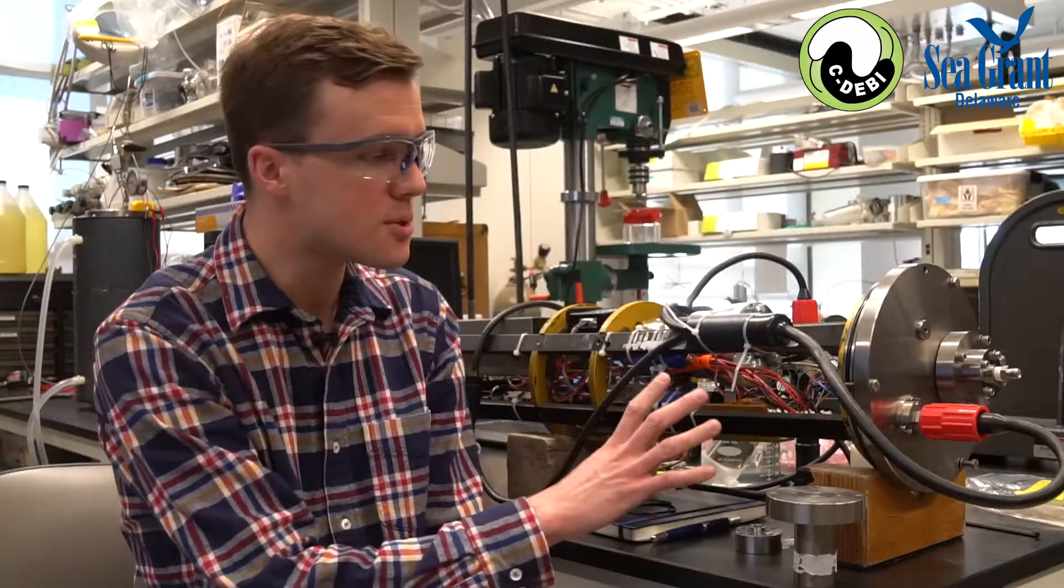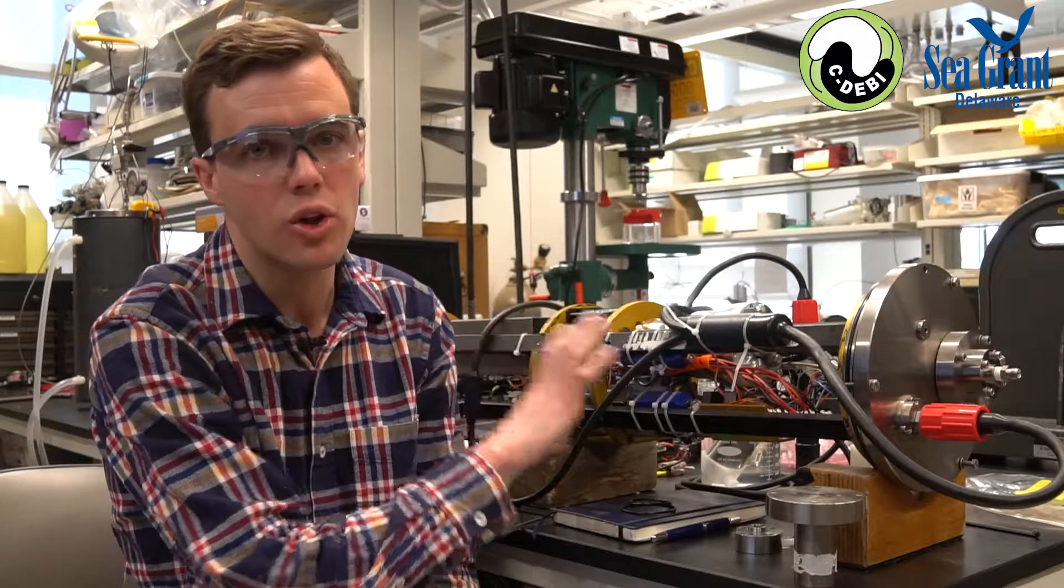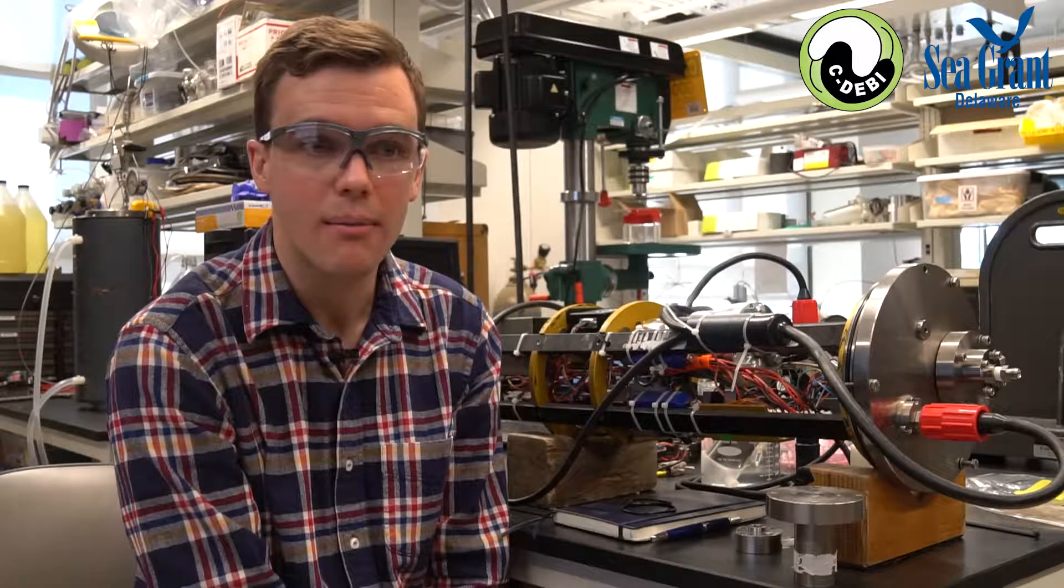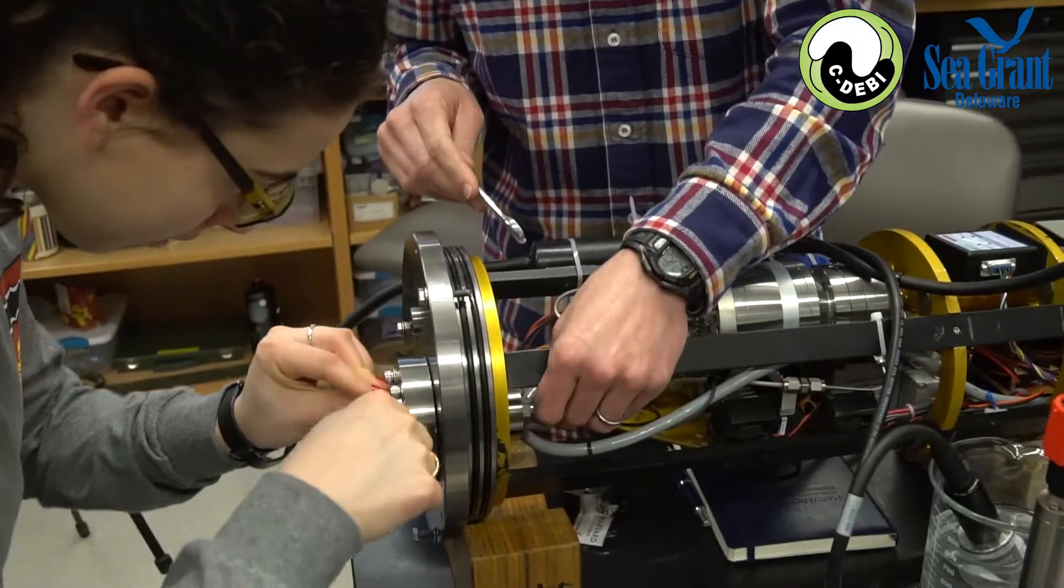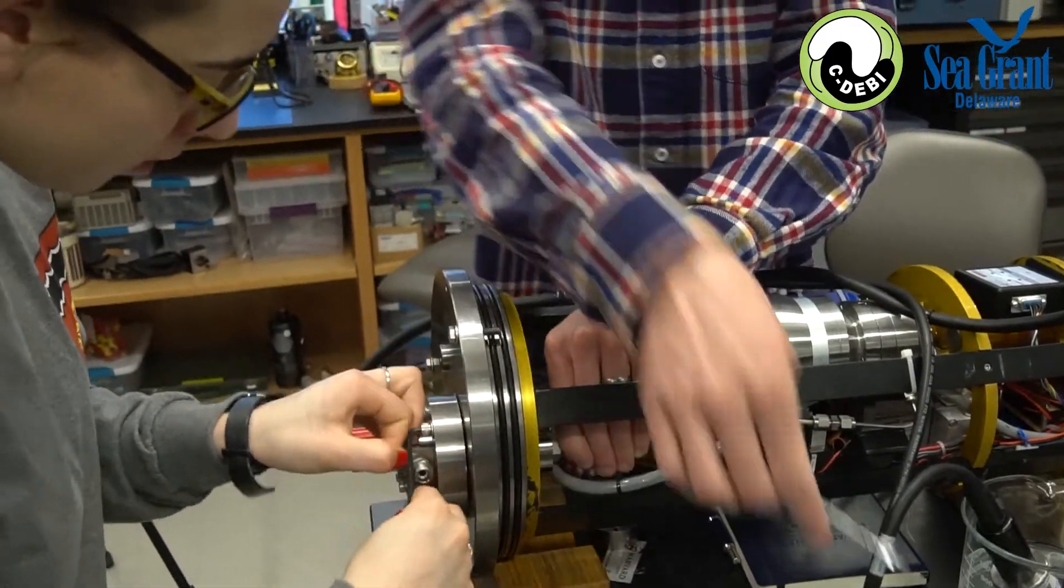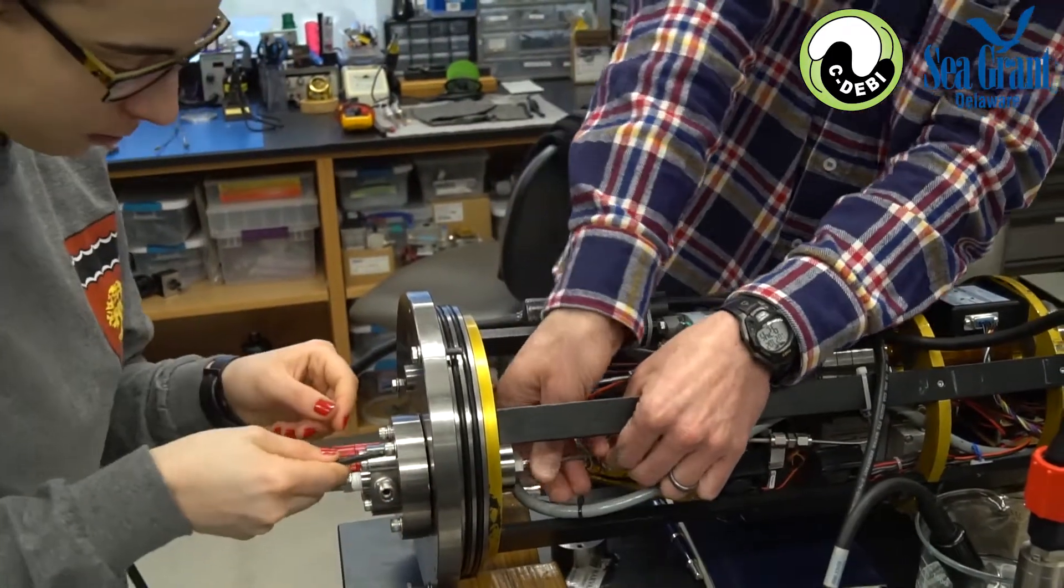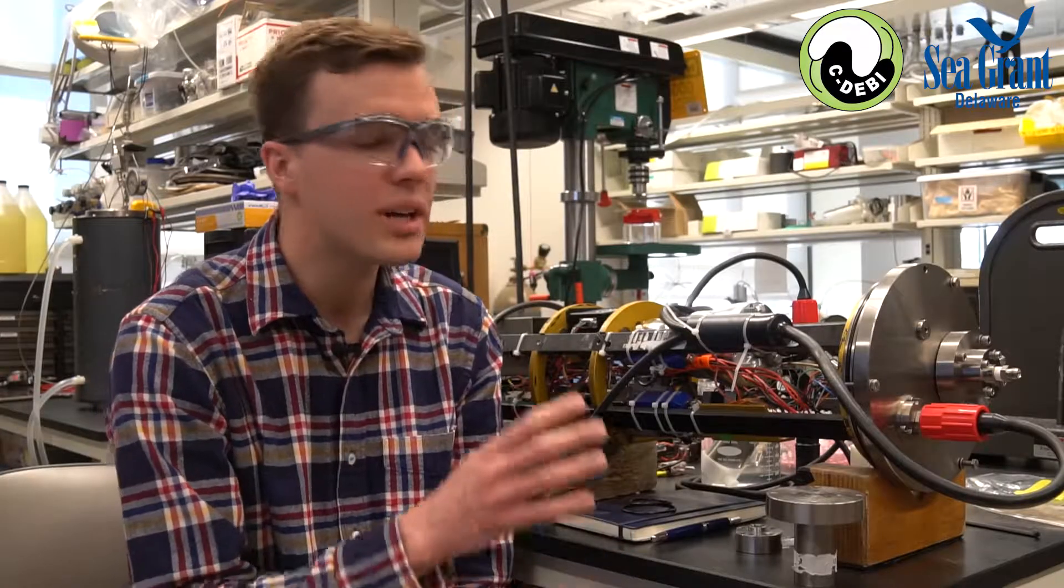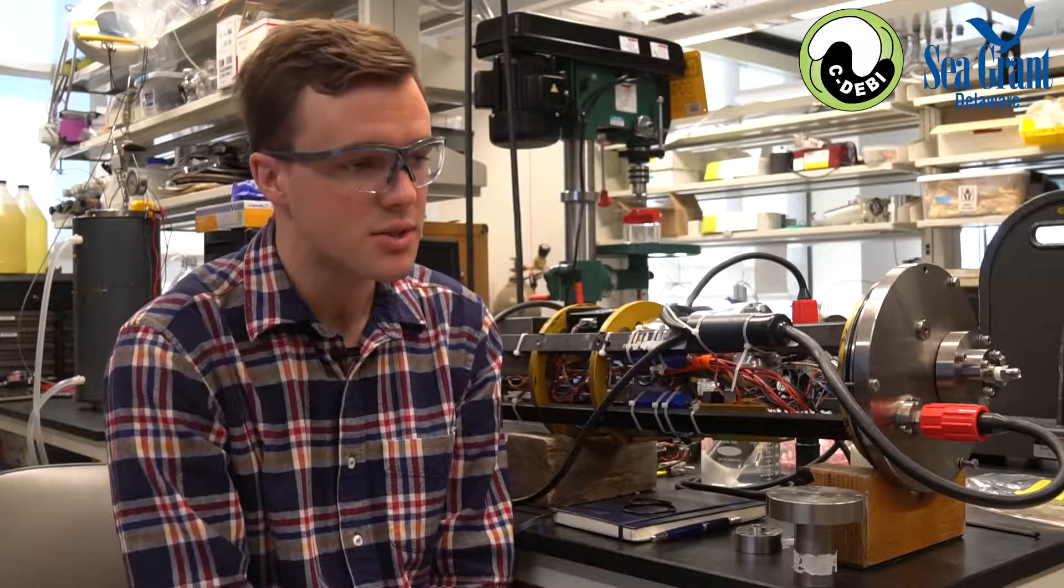We can take this instrument in a large tube pressure vessel to 4,000 meters depth, and that's several thousand pounds per square inch—the equivalent of holding a pickup truck on the end of a broomstick. So we can measure dissolved gas concentrations all the way down to these extreme depths and pressures.